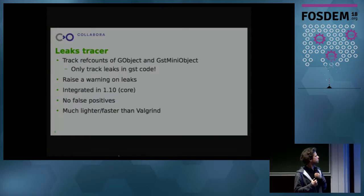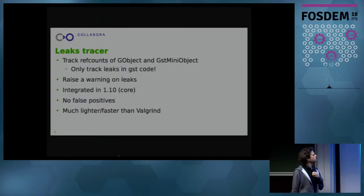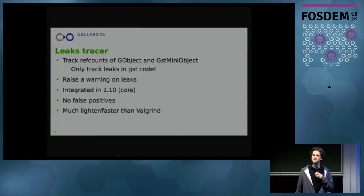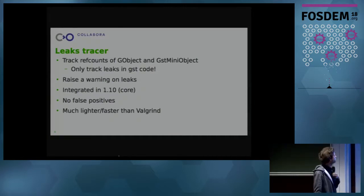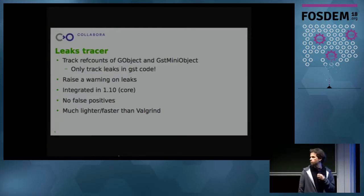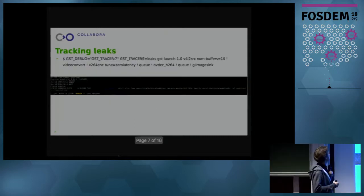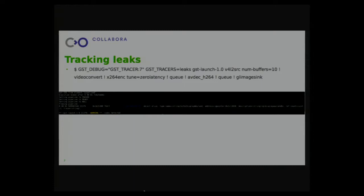Only the GStreamer code will be tracked, which is actually what we want. It will keep track of that, and at the end of the execution of the application, if it detects that some objects are still alive — which means they've been leaked because they should have been destroyed — it will raise a G_WARNING. So that's something you can hook into your QA or CI system to detect if any leaks have been introduced. This tracer has been integrated in GStreamer core in 1.10, so if you have that version, it's already there — you don't have to build any extra tool. The pipeline needs to terminate because leaks are detected at the end of the process.